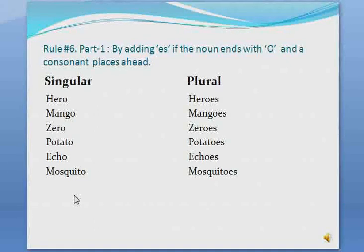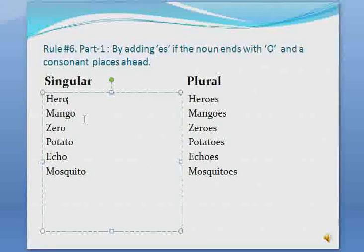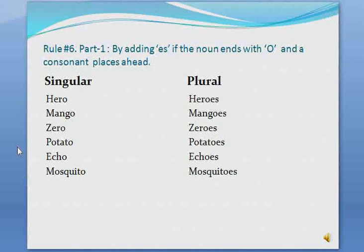Rule number six, part one: add 'es' if the noun ends with 'o' and a consonant comes before that 'o.' For example, the word 'hero' ends with 'o' and before 'o' is 'r,' which is a consonant, so we add 'es': hero→heroes. Similarly: mango→mangoes, zero→zeroes, potato→potatoes, echo→echoes, mosquito→mosquitoes.